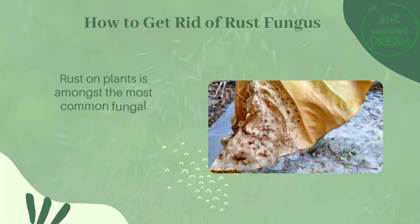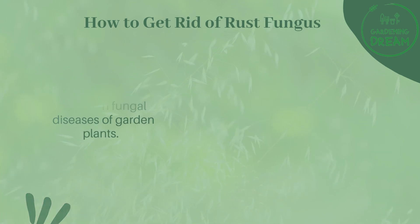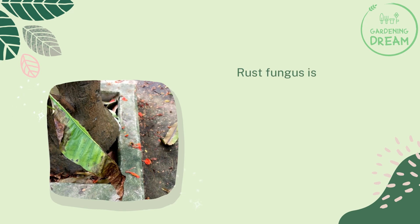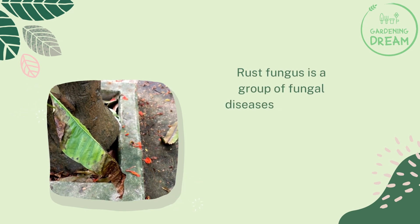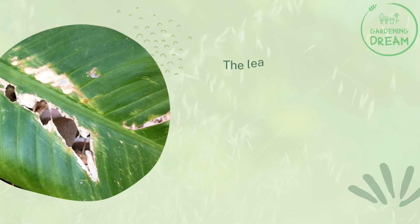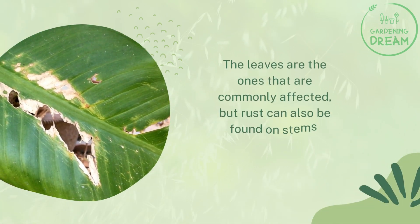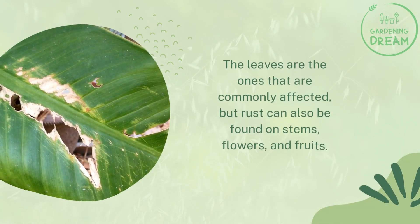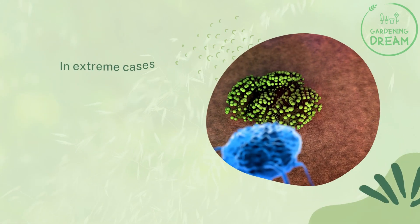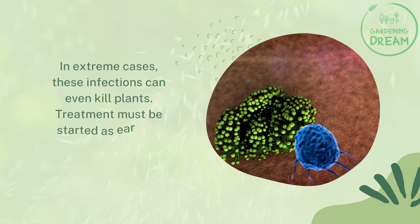Rust on plants is amongst the most common fungal diseases of garden plants. Rust fungus is a group of fungal diseases that affect the top part of a plant. The leaves are the ones that are commonly affected, but rust can also be found on stems, flowers, and fruits. In extreme cases, these infections can even kill plants.